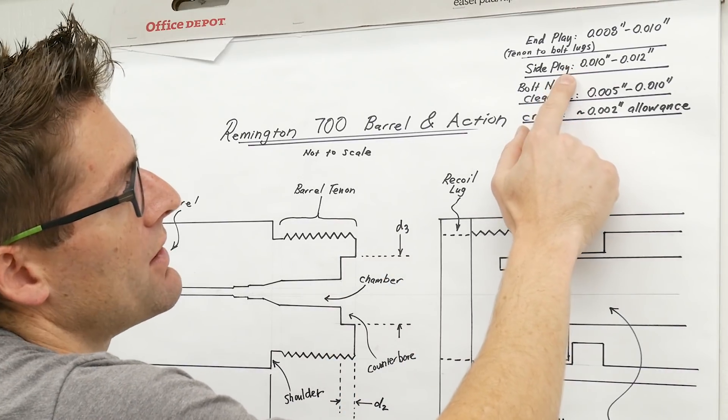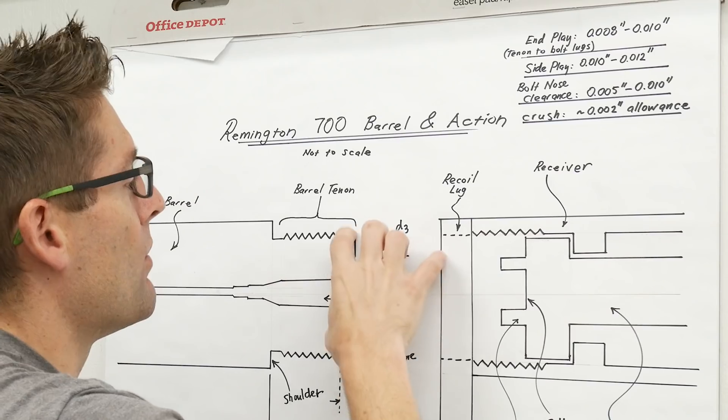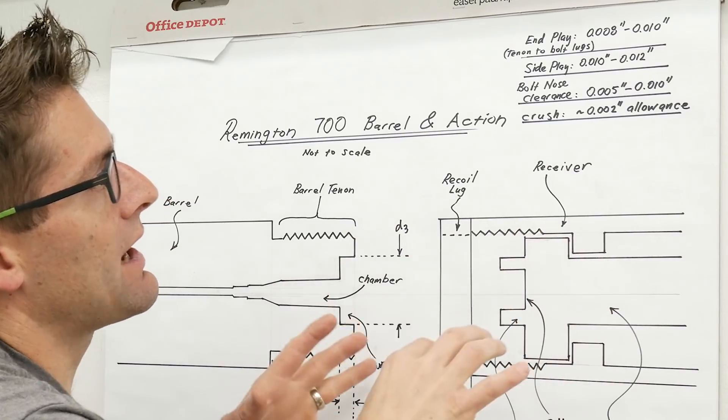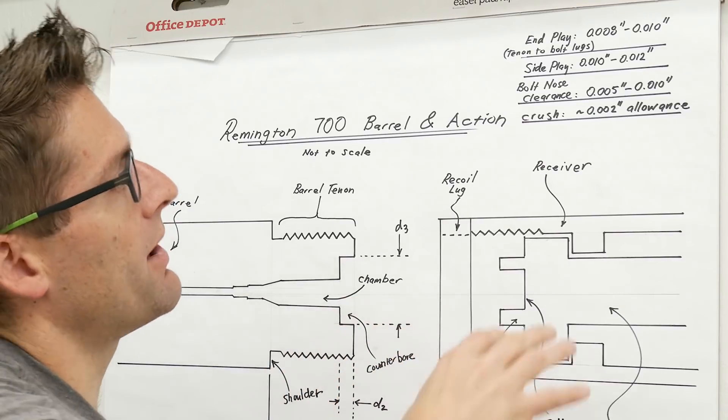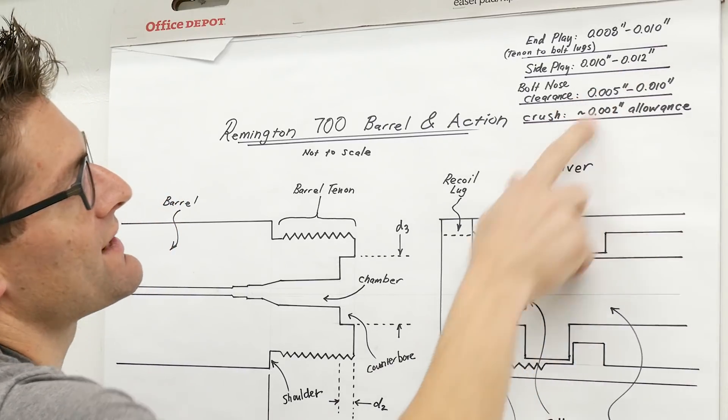I talked to Gordy Gritters about this because I've got an untrued out of the box Remington 700 action. I need a little bit more tolerance here so that I can assure that things won't be hitting each other, binding up. So I decided on ten to twelve thousandths of an inch for that side play.